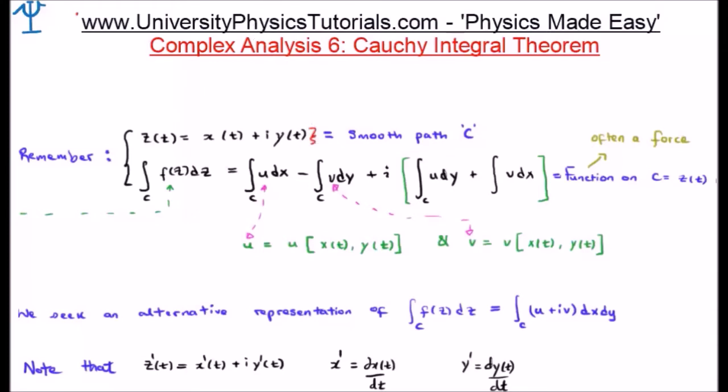A moment ago we saw that if we separated out the real and imaginary components of our function f(z), we could rewrite it separately. We could have u, which is a function of x and y, each a function of t if we like.